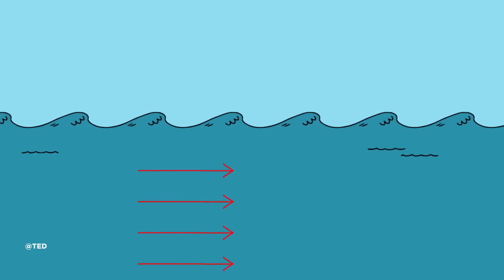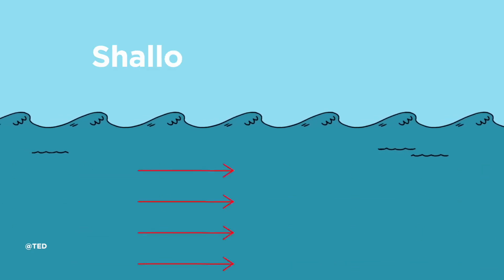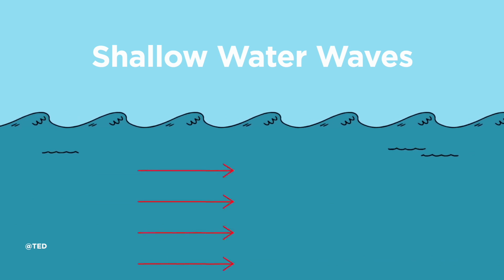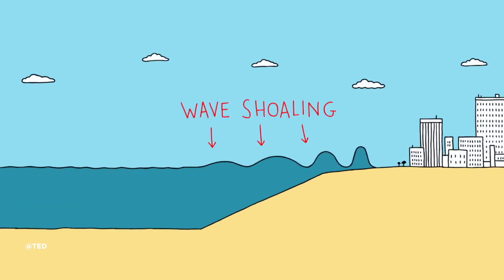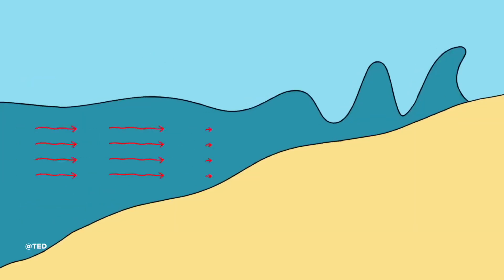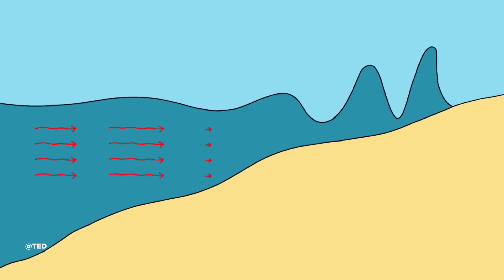In this limit, the wave behavior is similar to shallow water waves. As the wave propagates into shallower water, a phenomenon known as wave shoaling occurs. This is when wave speed slows down and the wave height increases to compensate for energy conservation.